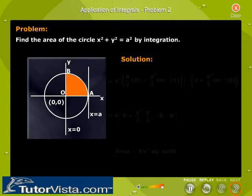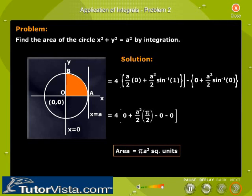Substituting the upper and lower limits 0 and a, we get the area equal to pi a squared square units.